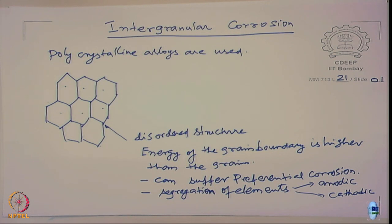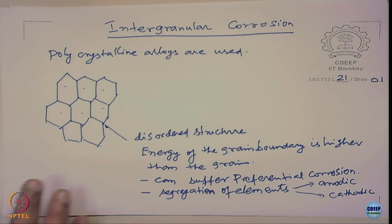If the segregated element is anodic, it dissolves. If it is cathodic, it induces dissolution of the grain boundary area. So the grain boundaries are not as corrosion resistant as the grains in a polycrystalline material.